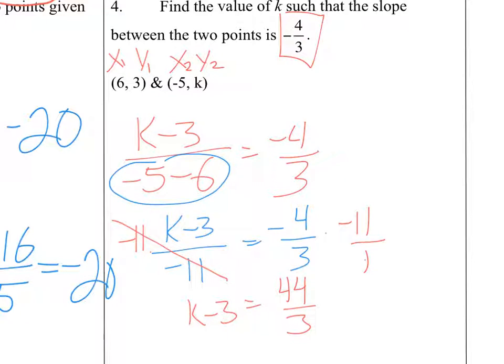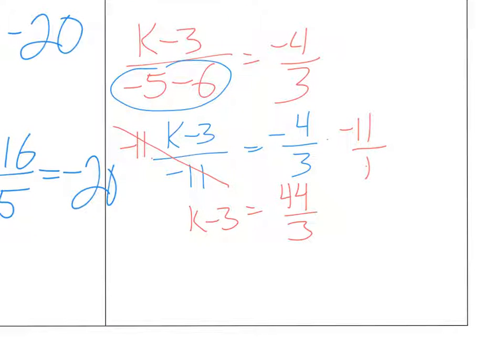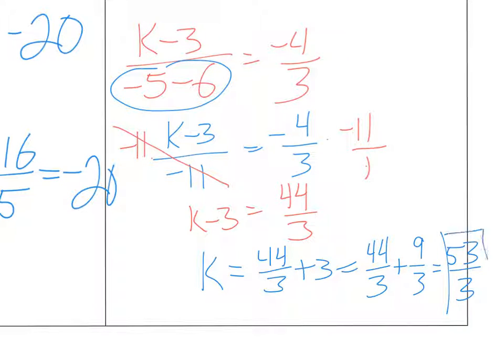All right, last thing I need to do is get rid of that minus 3 to get the k by itself. So I'm going to add it to both sides. 44 over 3 plus 3 to get those in the same denominator. 44 over 3. I'm going to change 3 to 9 thirds. And I get 53 over 3 is my final answer. I'm going to blame Mr. Butterworth for that answer.